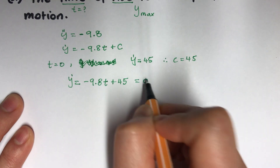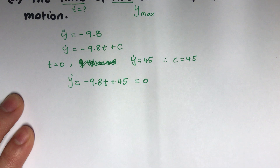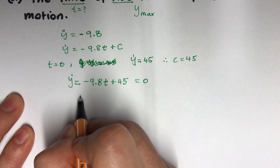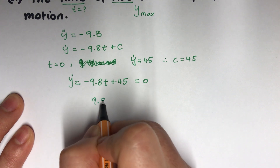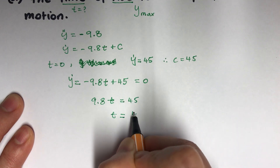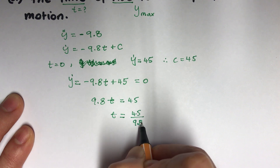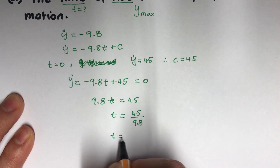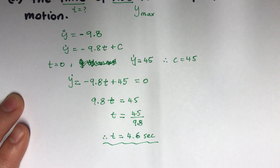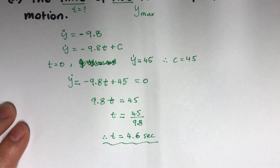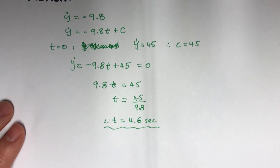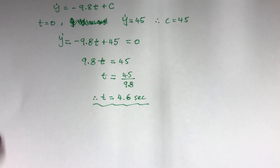To find the time of rise to the top, we set y-dot equal to zero, because at the maximum the velocity is zero. So 9.8t equals 45, giving t equals 45 over 9.8, which equals 4.6 seconds to one decimal place. So when the particle is at the top, it is after 4.6 seconds.